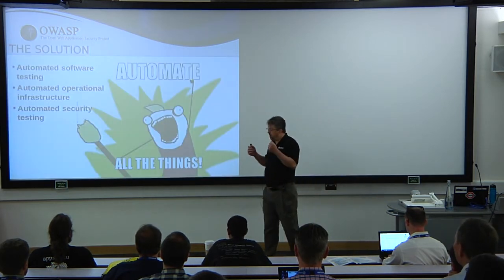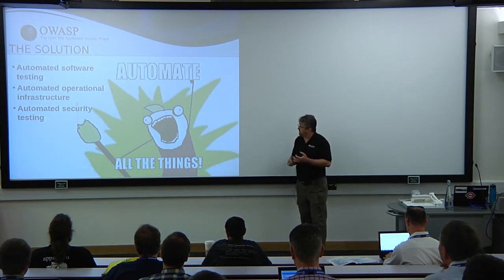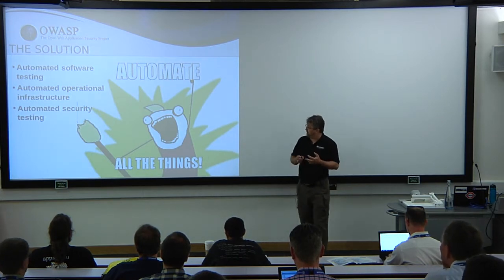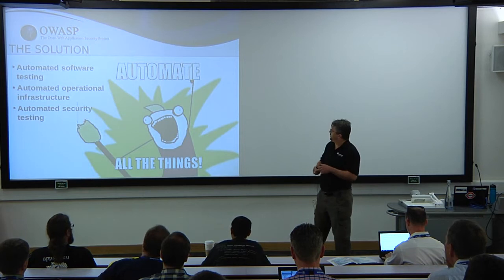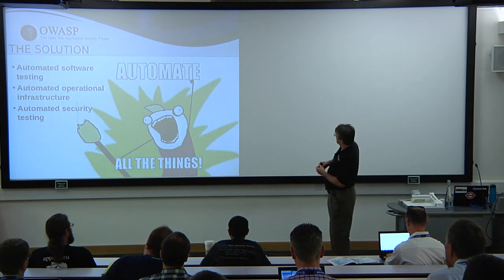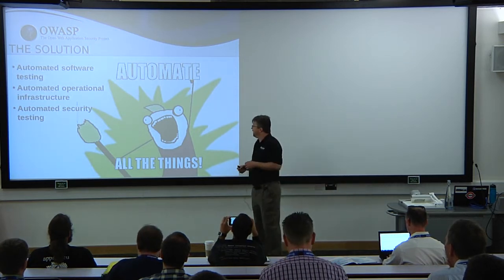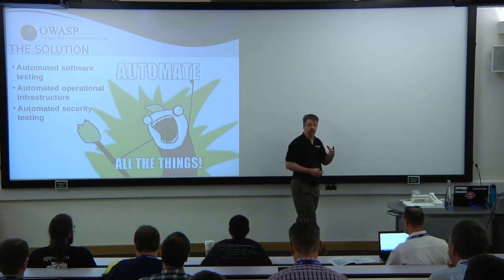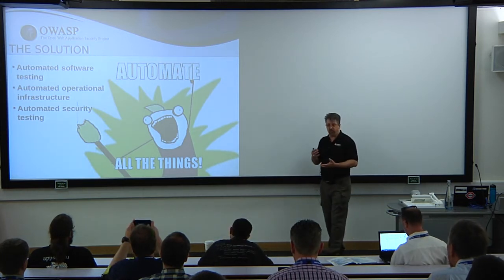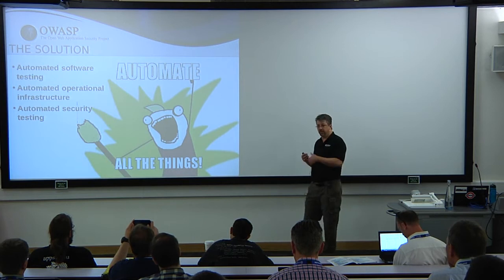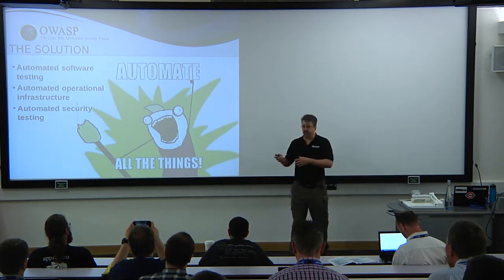So what do you do? Automate everything. Automate the software testing, automate the infrastructure, and automate automated security testing. I'm going to talk through those three key areas — first from a design and principle point of view, and then I'm going to talk about what we've done to try to implement those things at Rackspace.